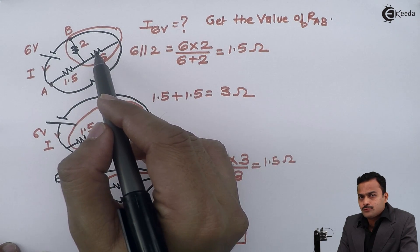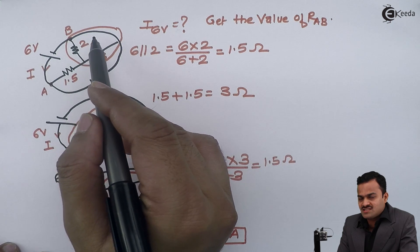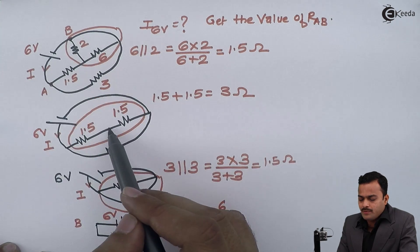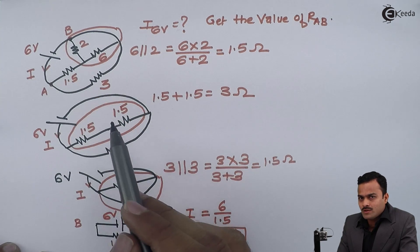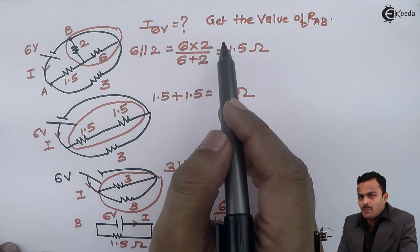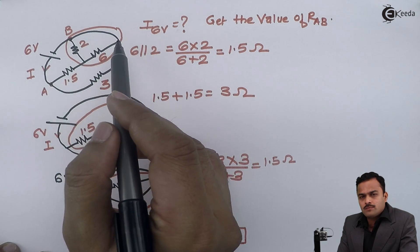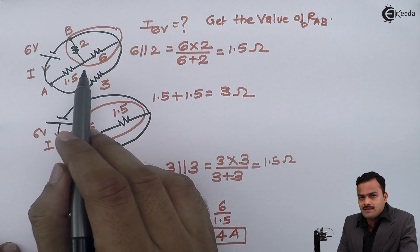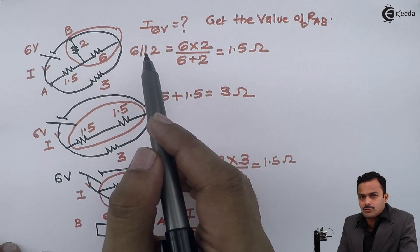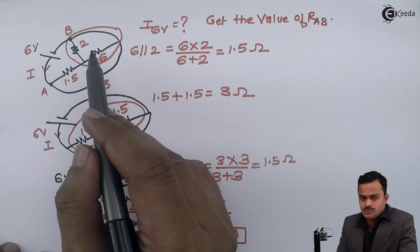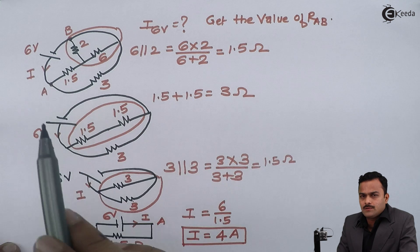The problem is important because we have to apply the concept that if two resistors form a loop they are in parallel, and when redrawing the circuit one resistor is removed while keeping the equivalent value. Irrespective of the geometry — whether it's a circle, triangle, or rectangle — the concept remains the same. We will see more numericals based on this in subsequent videos. Thank you.